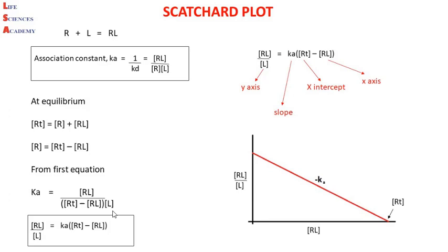Therefore, the ratio of RL complex to free ligand is Ka multiplied by total receptor concentration minus the receptor-ligand complex. This is the Scatchard equation for receptor-ligand binding interaction, and we can use this equation to plot a graph. We will use the RL/L ratio on the y-axis. Ka is the slope, and the negative sign is indicative of a negative slope graph. RT is plotted on the x-intercept and RL is on the x-axis.